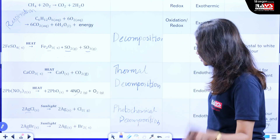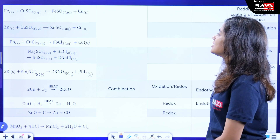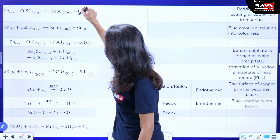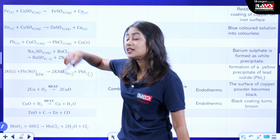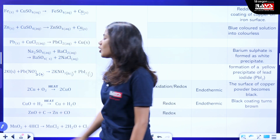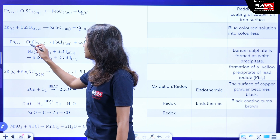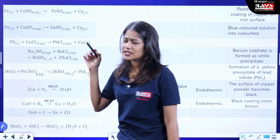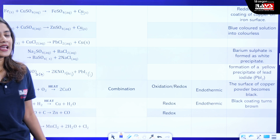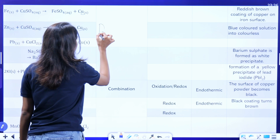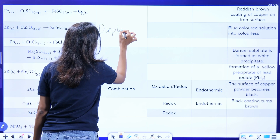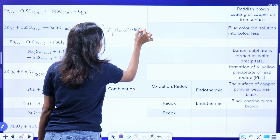The next reaction is iron reacts with copper sulphate and displaces copper. Zinc reacts with copper sulphate and displaces copper. Lead reacts with copper chloride and also displaces copper. These are examples of displacement reactions.